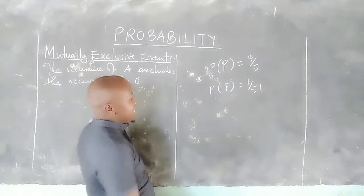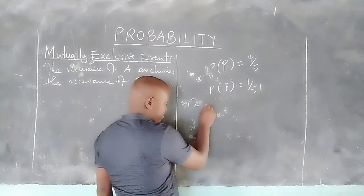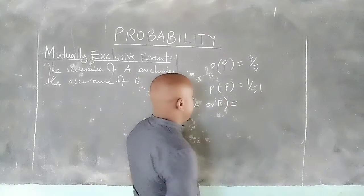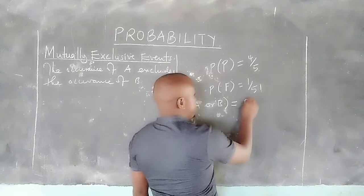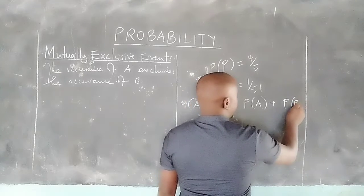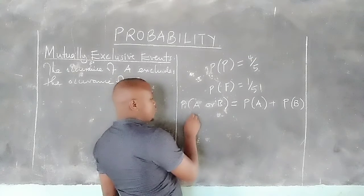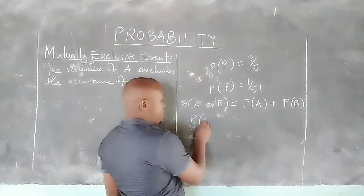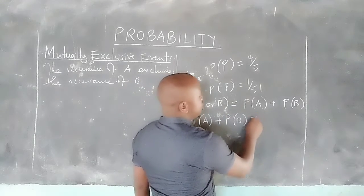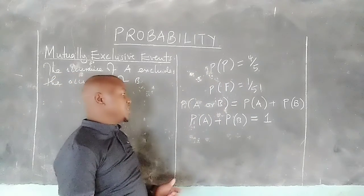In such events, we say the probability of A or B occurring equals the probability of A plus the probability of B. When they are mutually exclusive, the probability of one occurring plus the probability of the other should give us 1 — they should total to the total probability, which is 1.